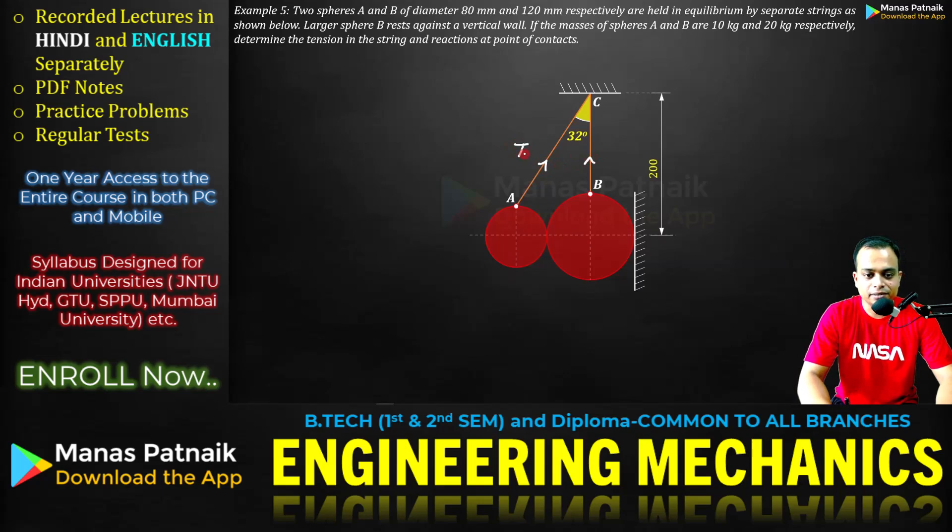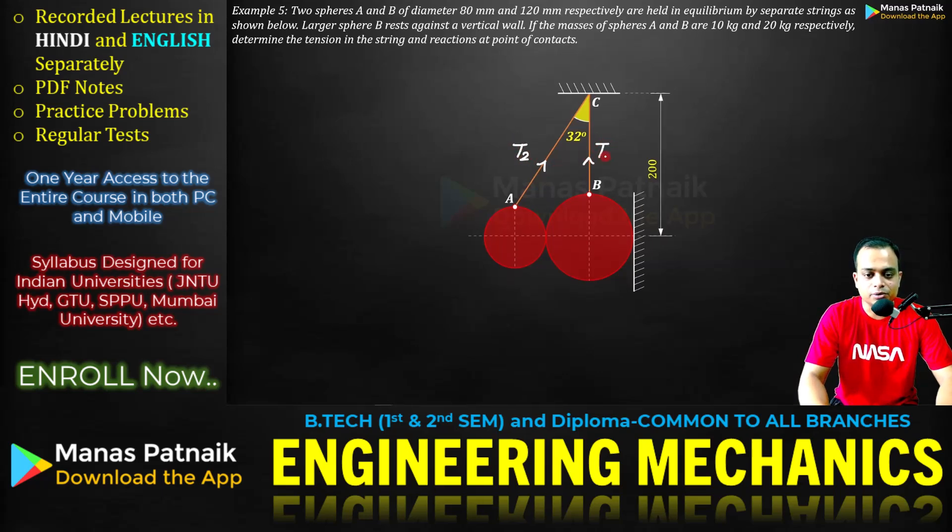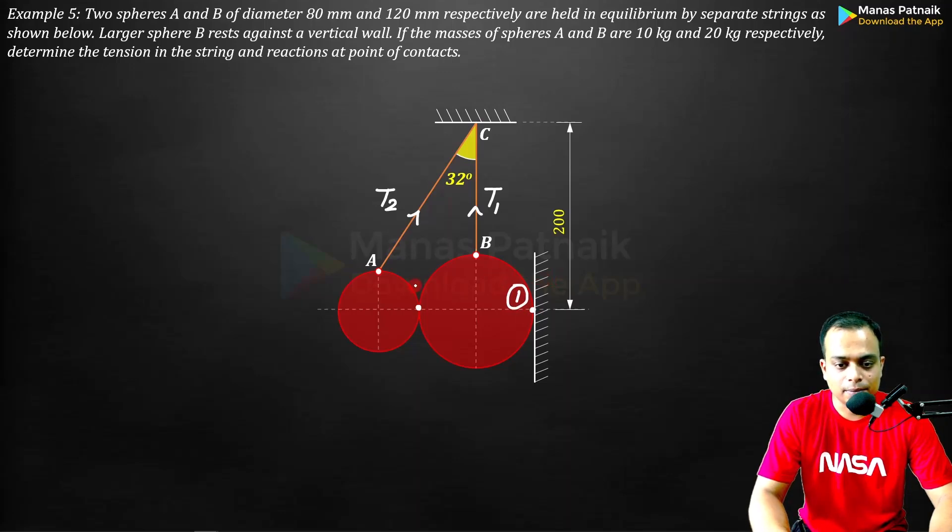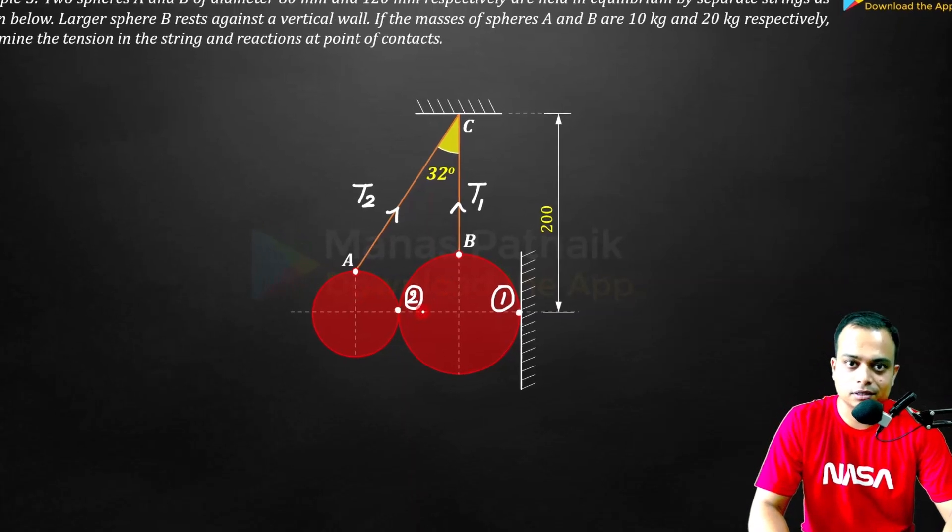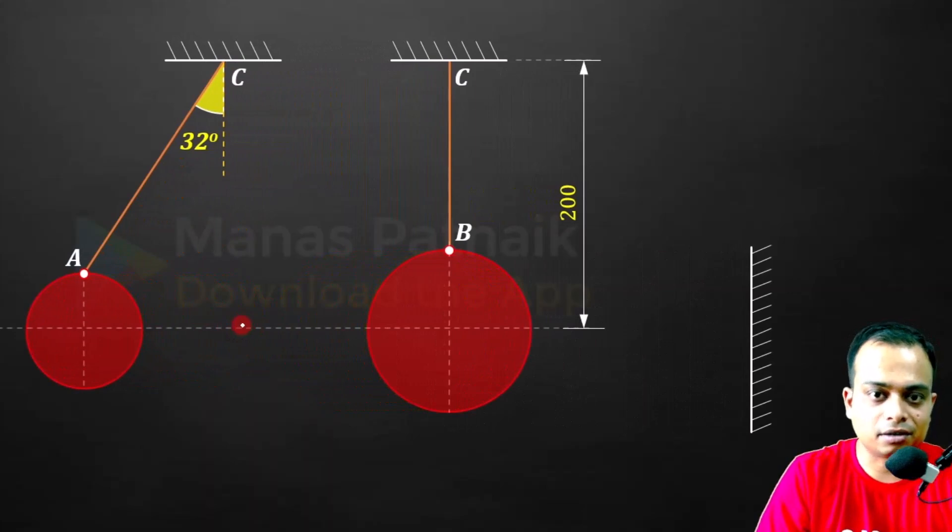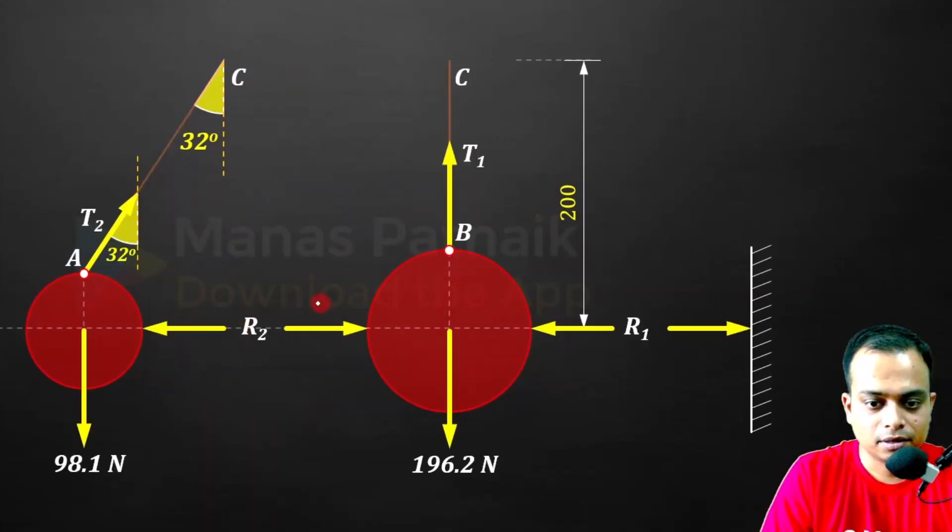We need to find the tension in these strings. This is T2, this is T1. There's this point of contact - let me call the contact of sphere B with the wall as point 1, and the contact shared between the two spheres as point 2. When you separate, there is going to be an action-reaction pair. This reaction is from B to A, and this reaction is from A to B.